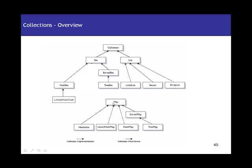This is the hierarchy of collections. Map doesn't come under the collection hierarchy directly but is still part of collections overall. Under the collection interface we have Set and List, with implementations like HashSet, LinkedHashSet, TreeSet for sets, and LinkedList, Vector, ArrayList for lists. Maps also have different implementations. Queues are also part of collections but are not covered in this tutorial.